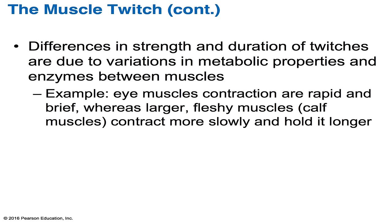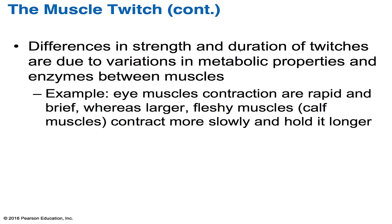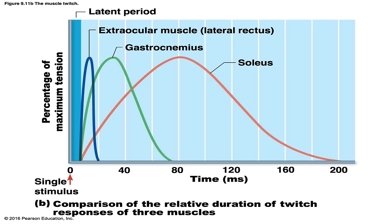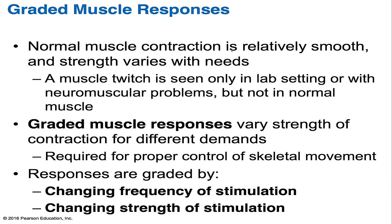Differences in strength and duration of twitches are due to variations in the metabolic properties and enzymes between muscles. For example, eye muscle contractions are rapid and brief, whereas the muscles of your calf — large and fleshy muscles — contract more slowly and hold much longer. In this myogram, the blue line represents an eye muscle, which is quite short in duration compared to the gastrocnemius and soleus muscles of the leg. Muscle twitches are seen only in lab settings or when there are neuromuscular problems, but not in normal muscles.